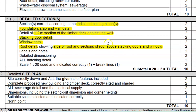Your roof details showing the side of the roof and the section of a roof above the stacking doors and windows — very specific. Your labels and notes include natural ground level, finish floor level, damp-proof course, etc. Your detail dimensioning covers foundation sizes, heights, etc., plus all hatching detail, and of course scale 1 to 20 must be used and indicated correctly.